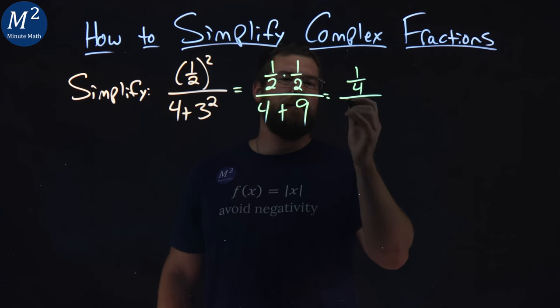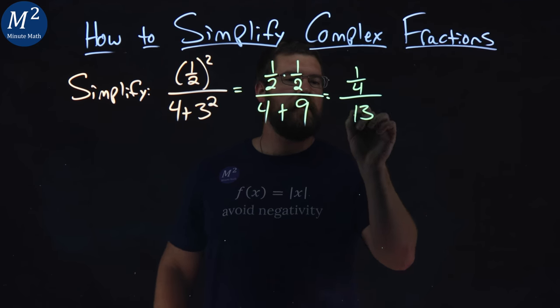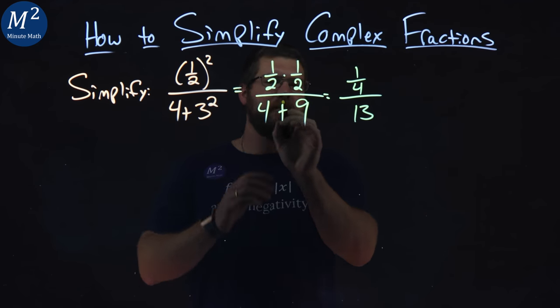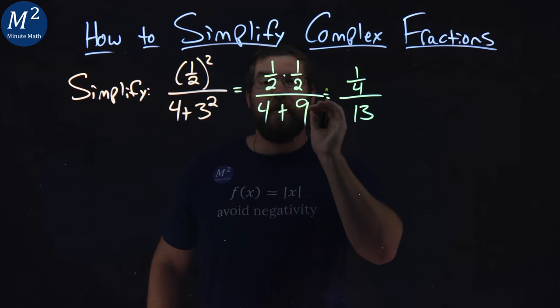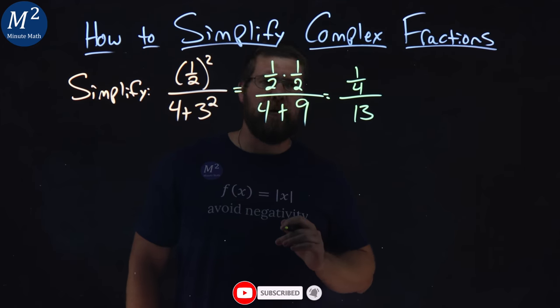Over, separating the, well, four plus nine simplifies to be that 13. The way we treat this, we simplify the numerator and denominator individually first there. Be careful. Some people try to divide one fourth by four. Not correct.